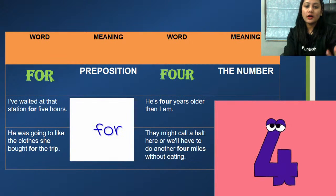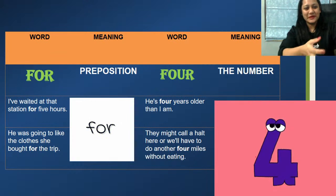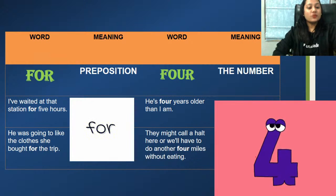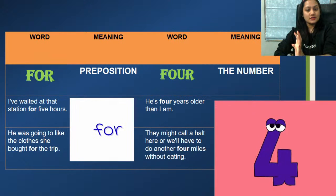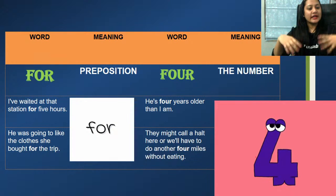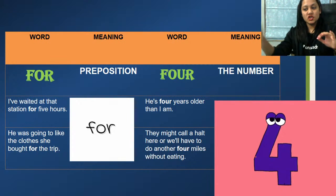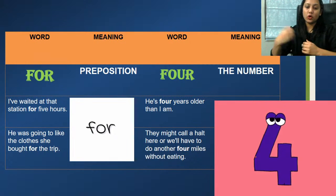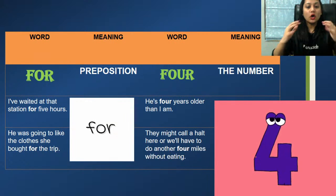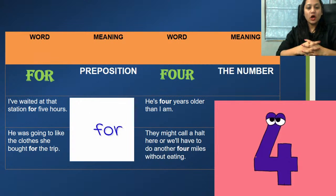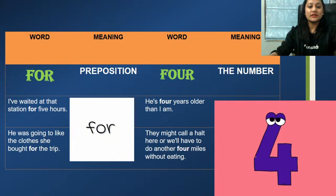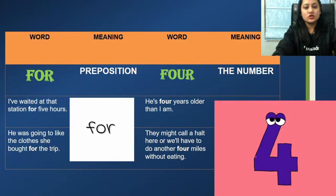Next is 'for' and 'four'. FOR is a preposition — 'I have waited at that station for five hours' and 'he was going to like the clothes she bought for the trip.' FOUR is the digit 4 — 'he is four years older than I am' and 'we will have to do another four miles without eating.'